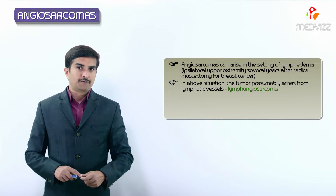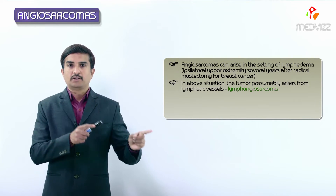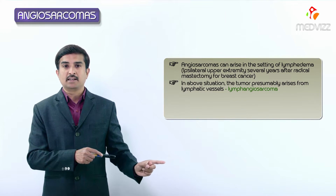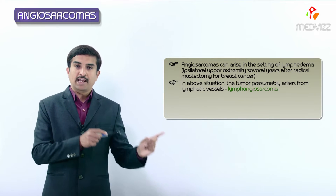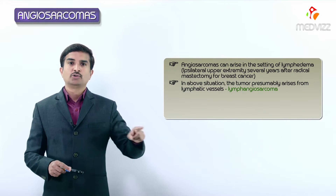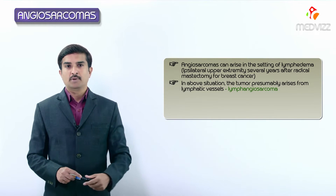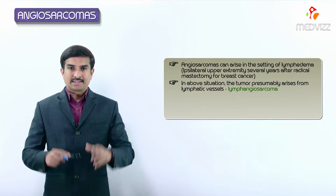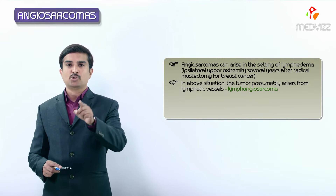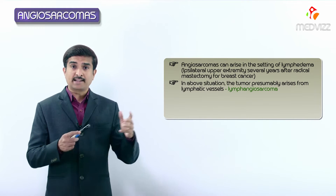In such instances, the tumor arises from the lymphatic vessels and is called lymphangiosarcoma. Lymphangiosarcoma is more commonly seen after radical dissection after breast cancer, which means it is more commonly seen in women above the age of 45 to 50 years - those who are more prone to carcinoma of the breast.